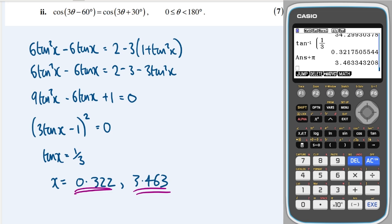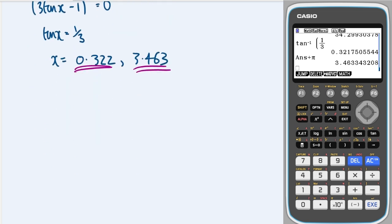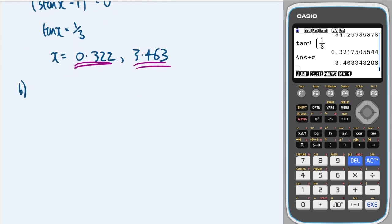Okay, part 2. We're going to need to use the double angle formula here, or the compound angle formula. So we have cos(3θ - 60) equals cos(3θ + 30).